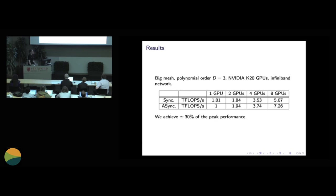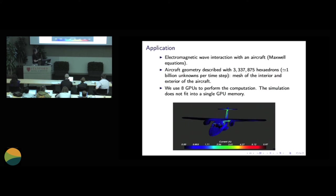So in the end, we are able to obtain good performance. So here you have the comparison between the synchronous MPI implementation and the asynchronous MPI implementation. So we see that we obtain an interesting speedup. And with this, we were able to compute other systems of conservation laws.